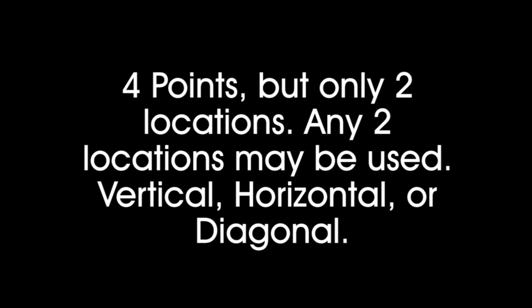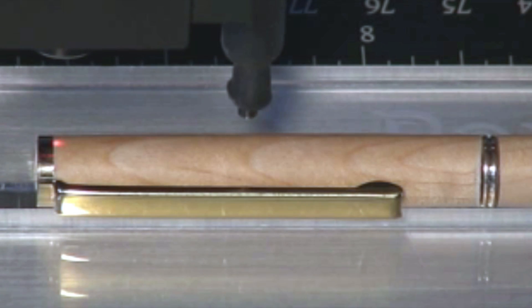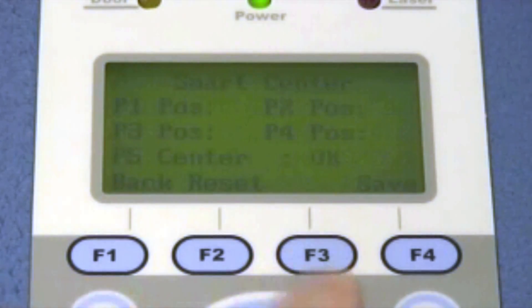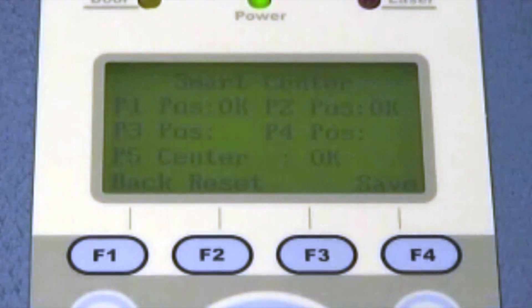Now sometimes we don't need four separate locations. Sometimes we need just two locations. We still have to use four points. So what we do is pick a point, in this case the left side. Now you hit F4 two times. F4 is going to save the same point or same location as two points.